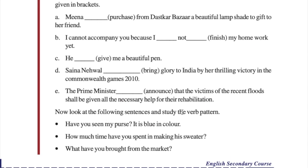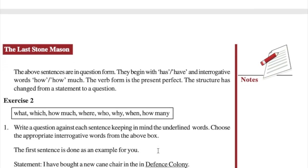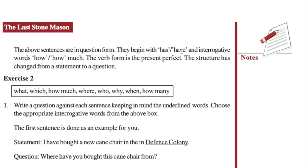Now look at the following sentences and study the verb pattern. 'Have you seen my purse?' — this is still present perfect but now it has become a question. When we had 'you have seen,' it becomes 'have you seen' — first have, then the subject, then the third form of the verb. This is the interrogative form. Other examples: 'How much time have you spent making this sweater?' and 'What have you brought from the market?' If the question begins with has or have, the answer is yes or no. If it begins with interrogative words like how or how much, the answer is open-ended.